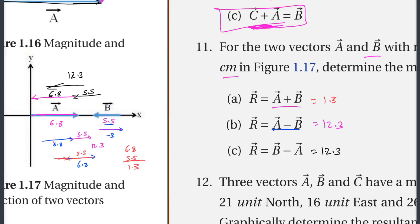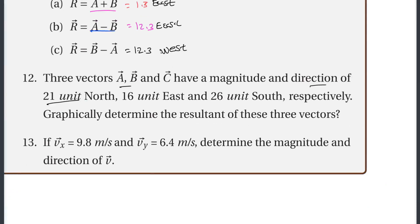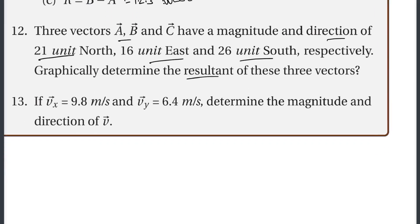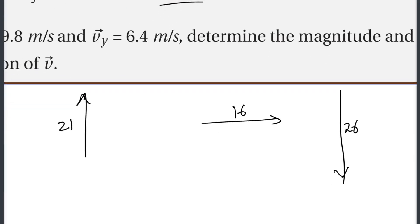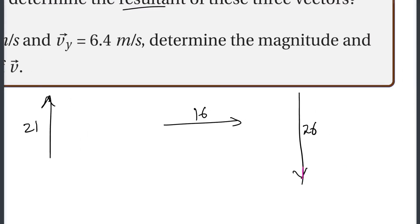Three vectors A, B, and C have magnitudes and directions of 21 units north, 16 units east, and 26 units south respectively. Graphically determine the resultant. Vector A points north, vector B points east, and vector C points south.